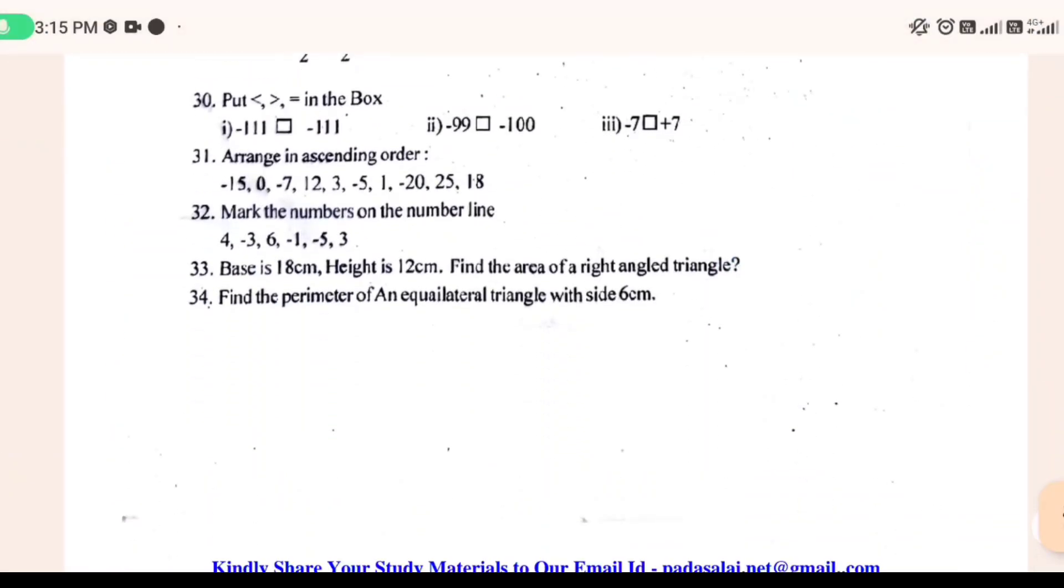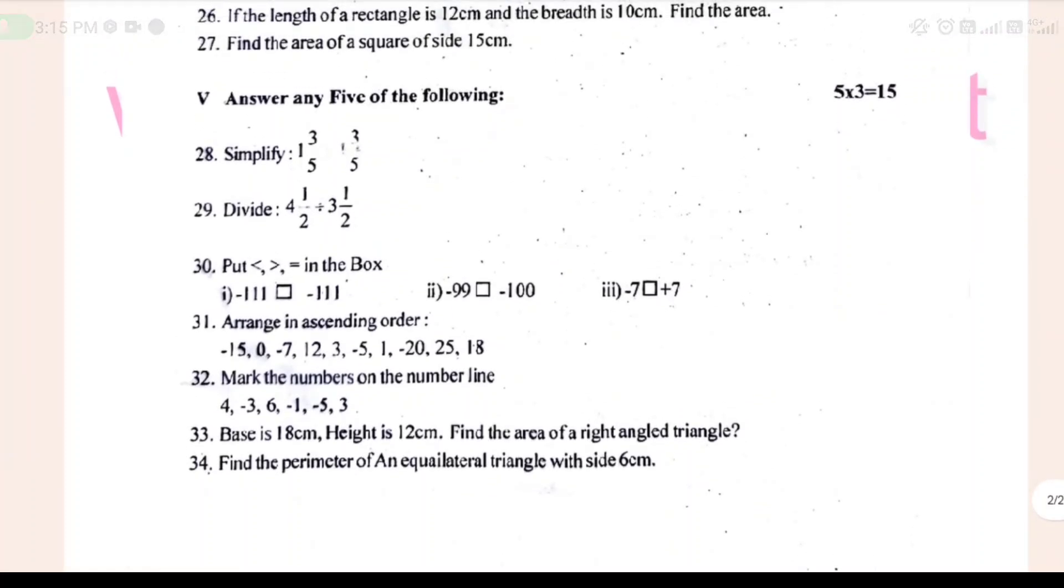Simplify, divide, put into a box, arrange order, make the numbers of a number line. Base is 18cm, height is 12cm, find the area of a right angle triangle. Find the perimeter of an equivalent triangle with side 6cm. Very simple, you can use a French class.